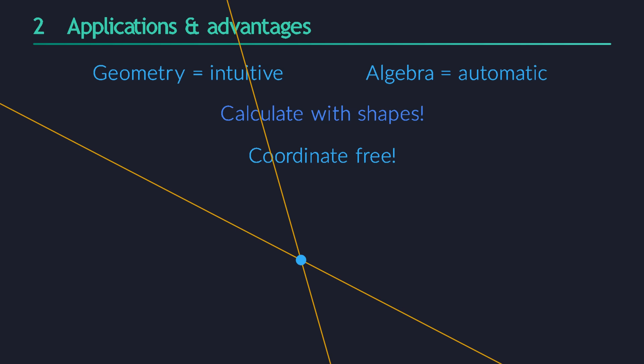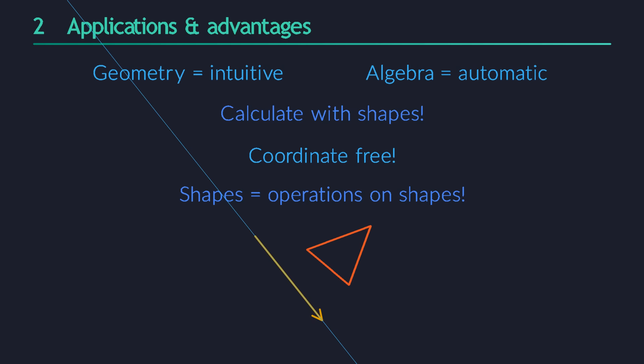Another cool feature of geometric algebra, one that we will explore in depth, is that it makes no distinction between shapes and operations on those shapes. A vector can serve as an arrow that you can rotate, but it can also serve as a reflection, flipping other objects around its line.